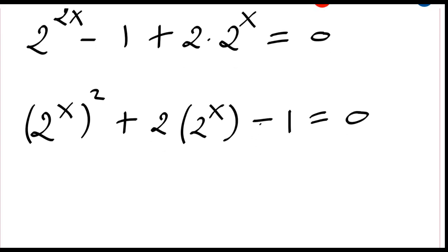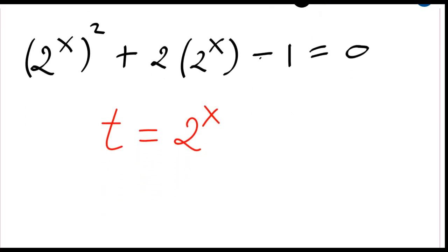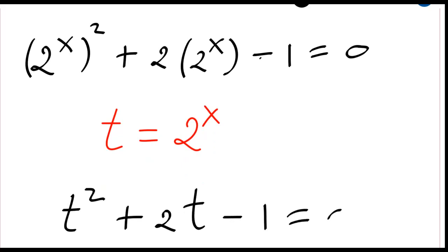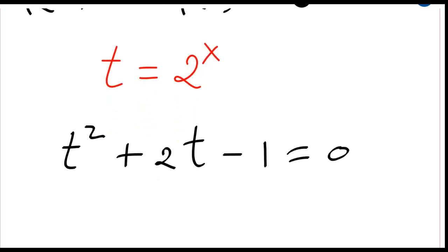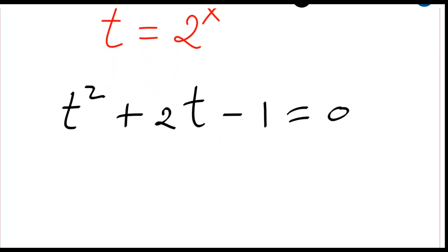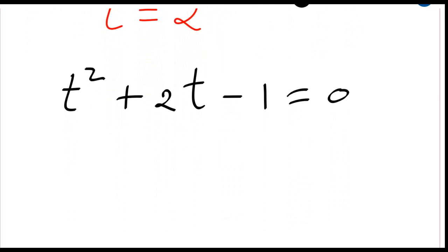You see directly that we have a quadratic equation with t equal to 2 to the power x. So our equation can still be written as t squared plus 2t minus one equal to zero. And if we have to solve this equation, we will just compute the discriminant delta, which is b squared — 2 squared, which is four — minus four times a, which is one, times minus one.